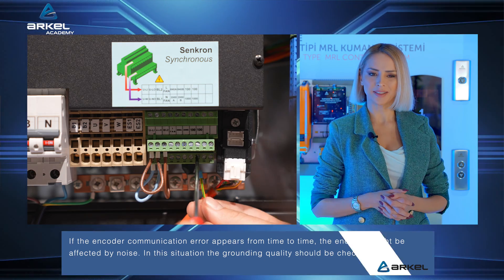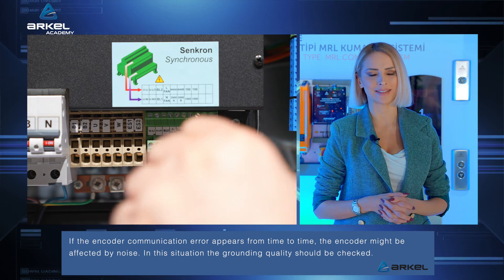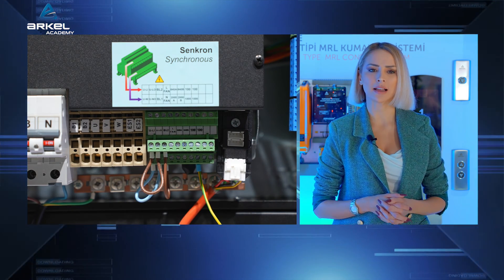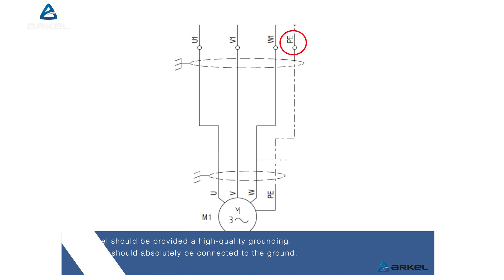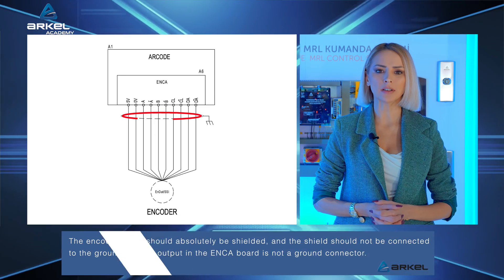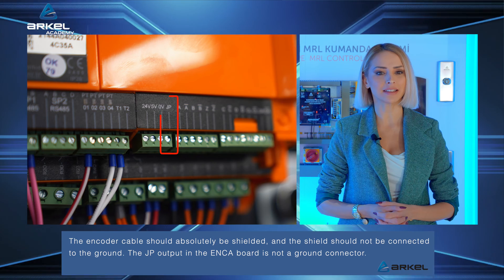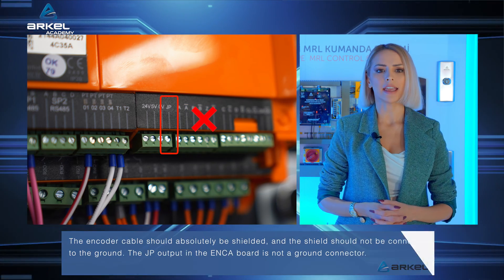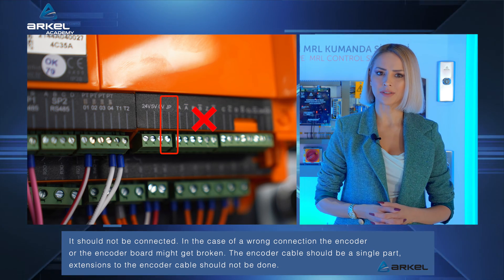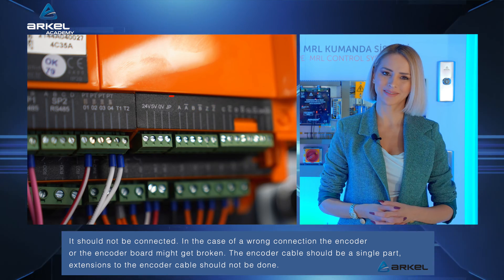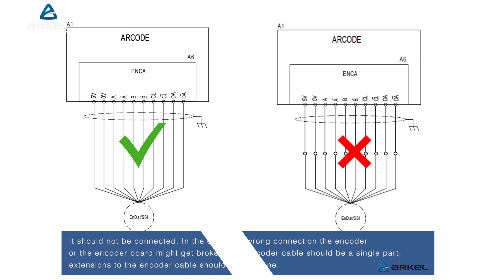If the encoder communication error appears from time to time, the encoder might be affected by noise. In this situation, the grounding quality should be checked. The panel should be provided a high quality grounding. The motor should absolutely be connected to the ground. The encoder cable should absolutely be shielded, and the shield should not be connected to the ground. The JP output on the Enka board is not a ground connector and should not be connected, as a wrong connection might break the encoder or the encoder board. The encoder cable should be a single part — extensions to the encoder cable should not be done.